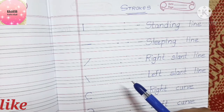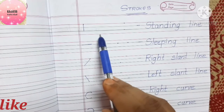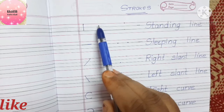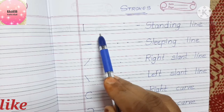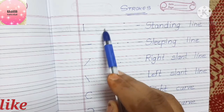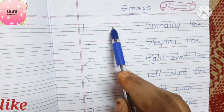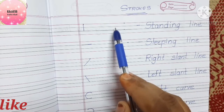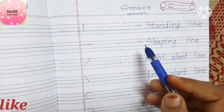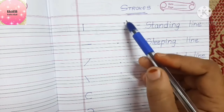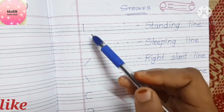The most important thing we should remember is we should always follow the four lines in English to write English alphabets. For some letters we'll use just the first three lines, for some just two lines, or for some we'll use the second, third and fourth line. For all capital letters we'll be using just the first, second and third line.